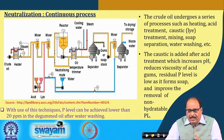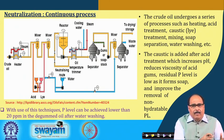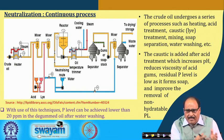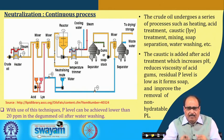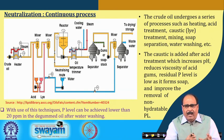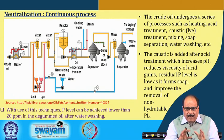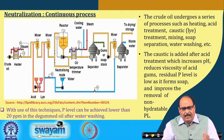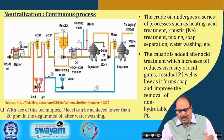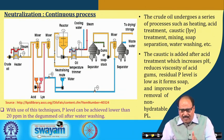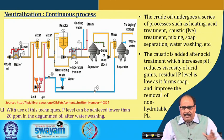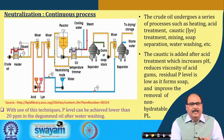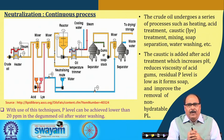In the continuous process, in principle it is the same as the batch process — intimate mixing of oil with suitable concentration of alkali, proper reaction time, settling, and soap removal. However, the crude oil undergoes a series of steps continuously: heating, acid treatment, caustic treatment, mixing, soap separation, and water washing, as shown in the process flow chart.